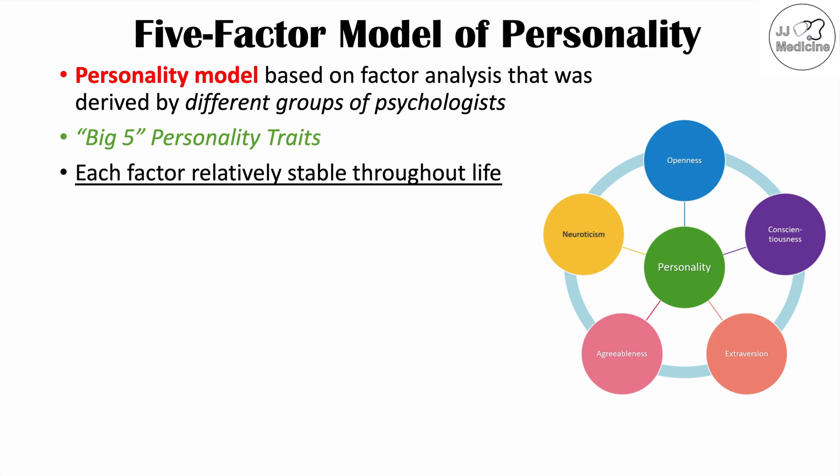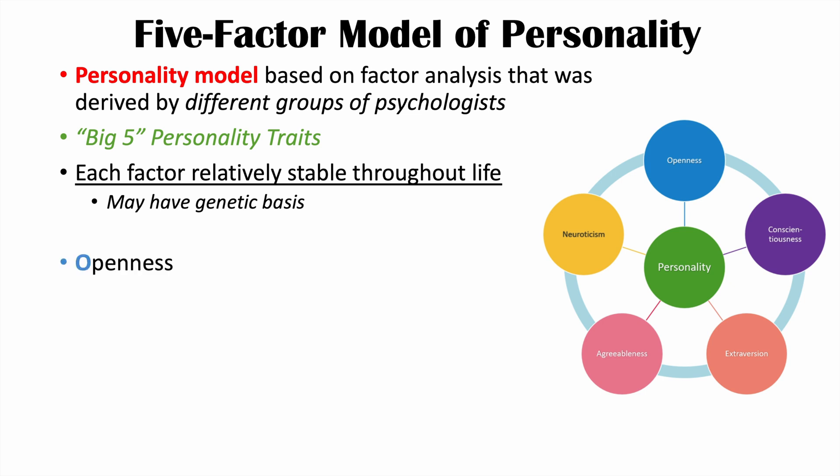Each factor is relatively stable throughout life. Although some of them may change as an individual gets older, and we'll briefly touch on that. Because of this relative stability, there may be some genetic basis for each of these traits, and there may also be some cultural influence on them as well. These traits include openness, conscientiousness, extroversion, agreeableness, and neuroticism.